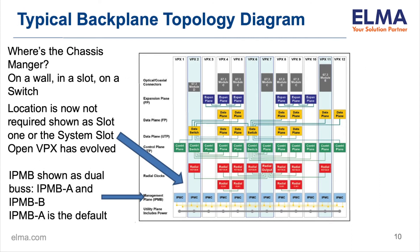Where do we find this? Looking at a topology diagram for a backplane, you ask: where is the chassis manager — on a wall, in a slot, or on a switch? As the specifications have evolved, the chassis manager is no longer required to be in slot one or the system controller slot. The IPMB is shown as dual buses, IPMB-A and IPMB-B, located in the utility connector. The default is IPMB-A; IPMB-B is available but does not always have to be used — it would be used in a redundant application.